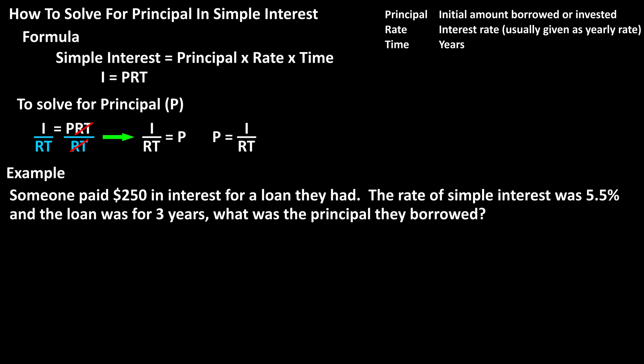As an example, let's say that someone paid $250 in interest for a loan they had. The rate of simple interest was 5.5%, and the loan was for 3 years. What was the principal or initial amount of money they borrowed?